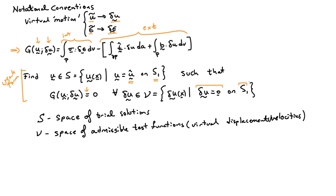The set S is called the space of trial solutions — every function satisfying the displacement boundary conditions. The set V is called the space of admissible test functions, also known as the space of admissible virtual displacements or admissible virtual velocities. The finite element method works by approximating these spaces, considering only a finite subset of functions that are u-hat on S1 or zero on S1. This is how the complex boundary value problem statement becomes completely tractable.